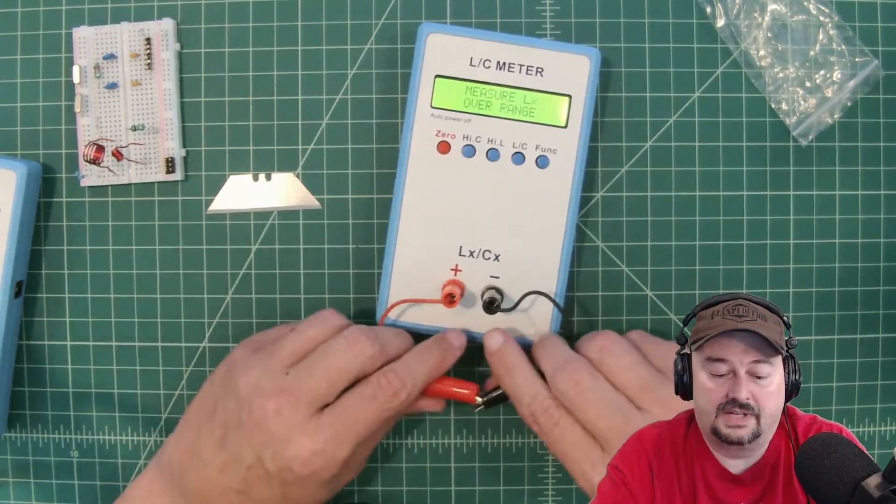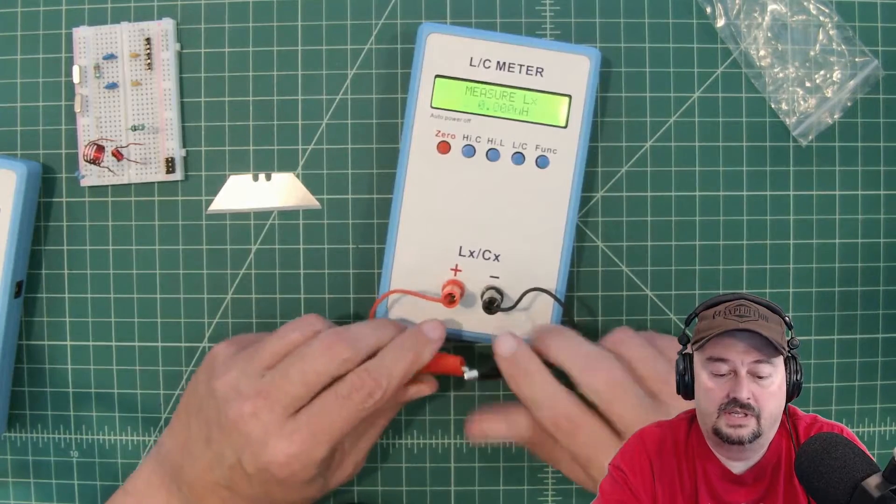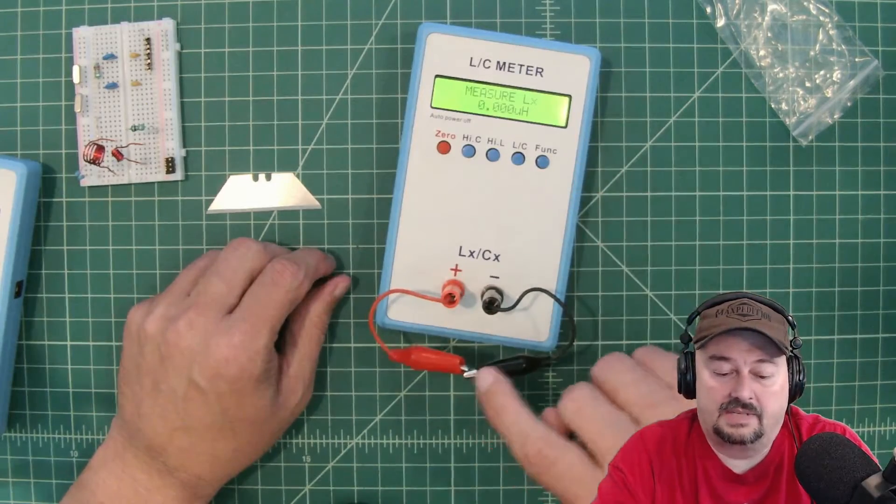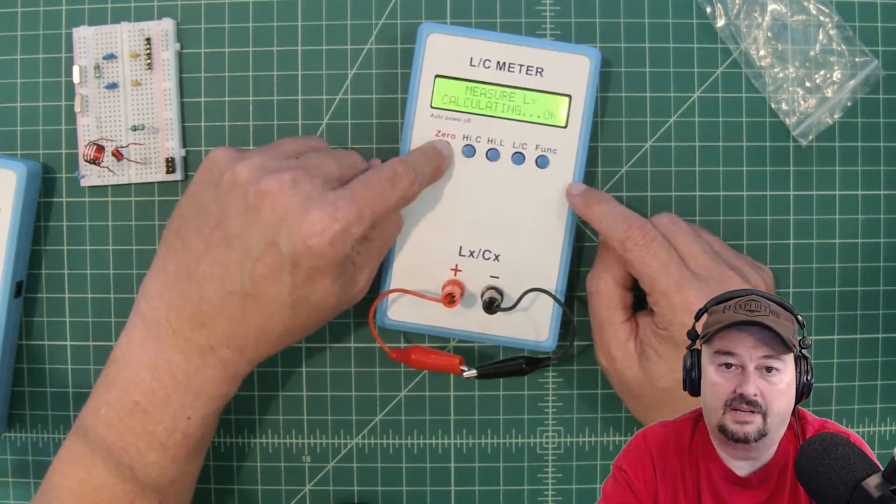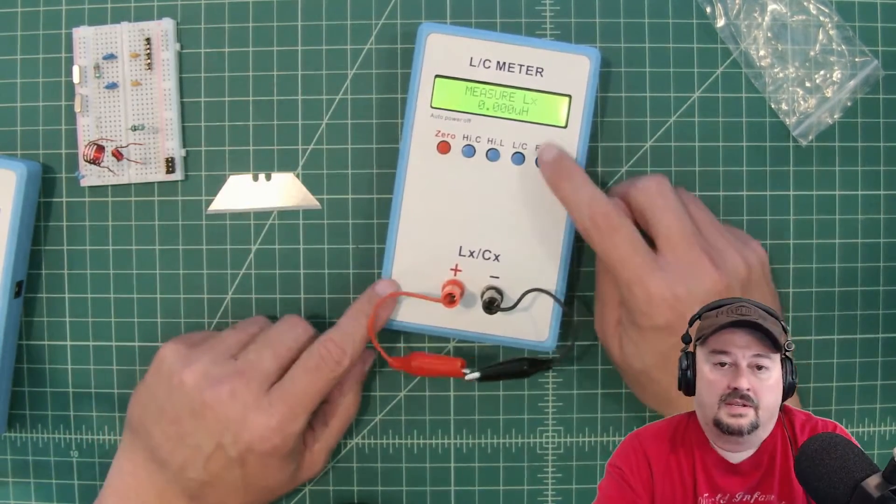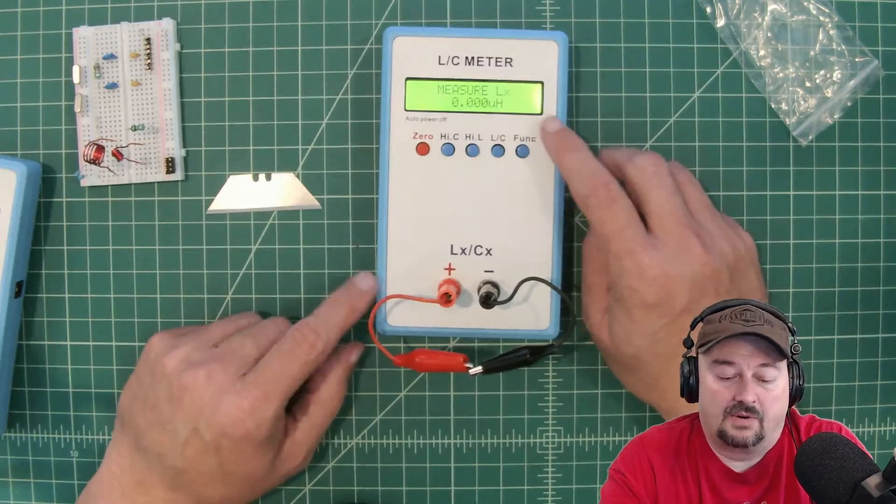And right now we're overranged. And for inductance, when you run your calibration, you want to actually make sure that these are connected. And we're already at zero, but we're just going to go ahead and recalibrate anyway. So here we are at zero microhenries.